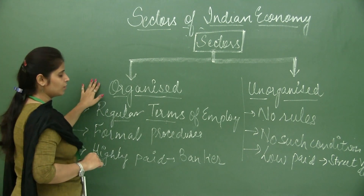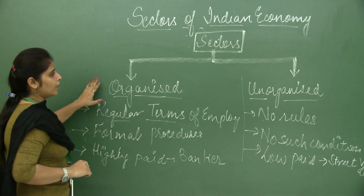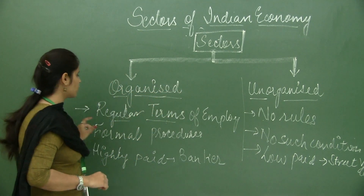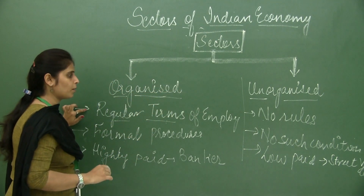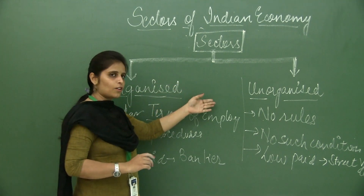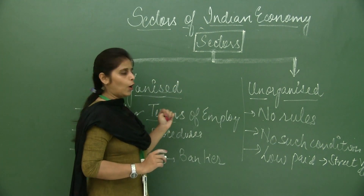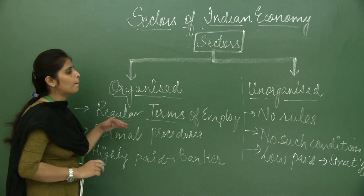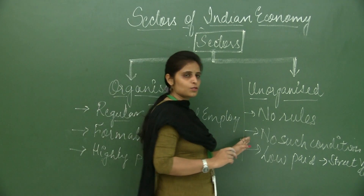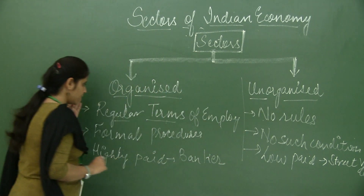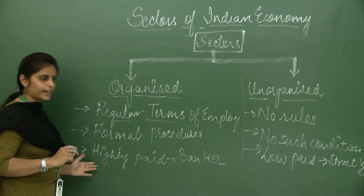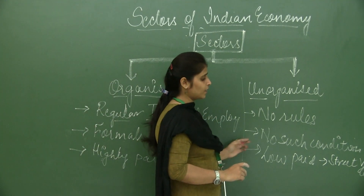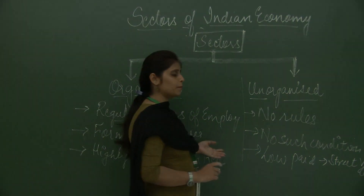Let's recapitulate. The two sectors of the Indian economy are organized and unorganized. In the organized sector, there are regular terms of employment and formal procedures for hiring, and workers are highly paid. In the unorganized sector, there are no such rules of employment, no formal conditions, and workers are low paid — such as street vendors or laborers.